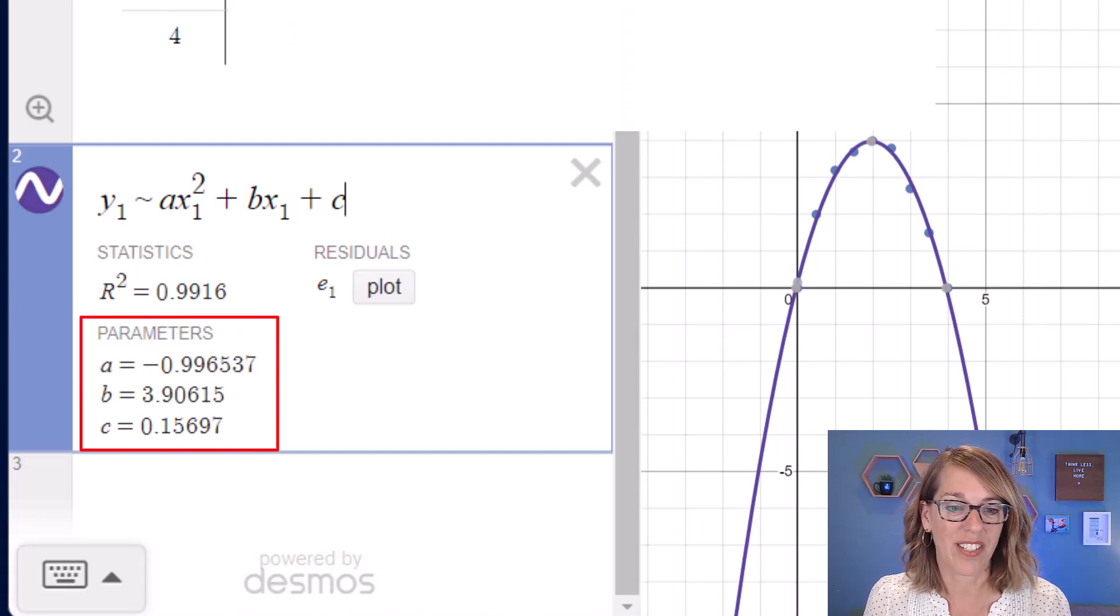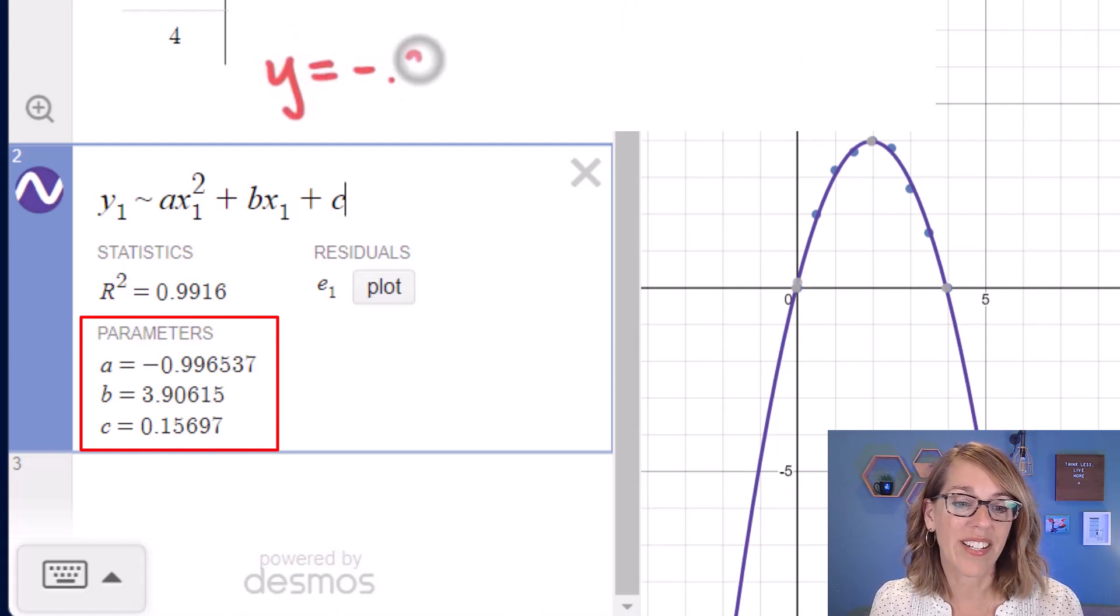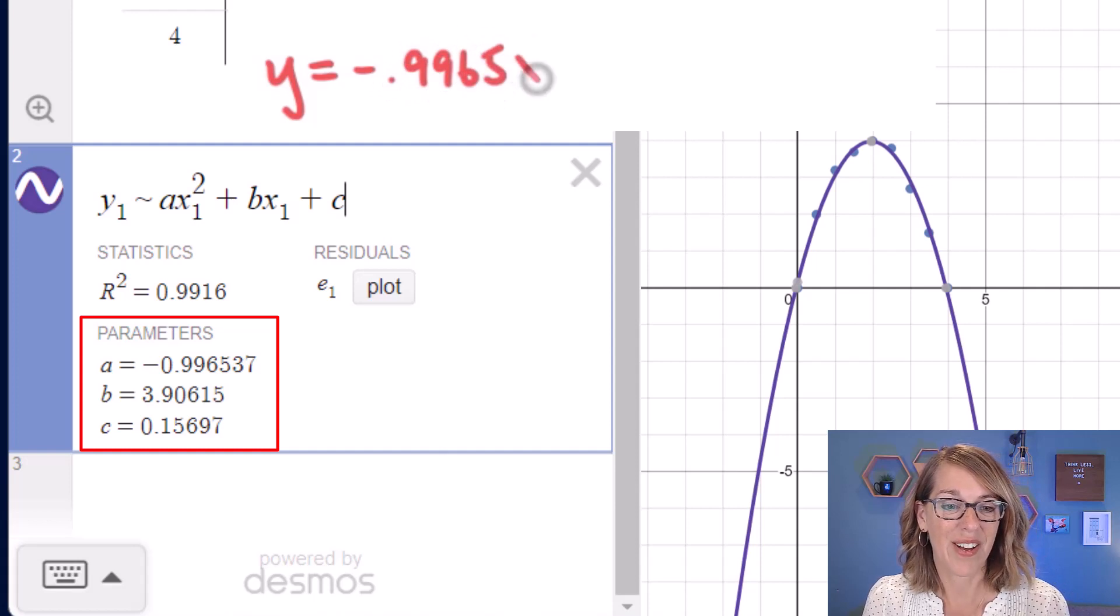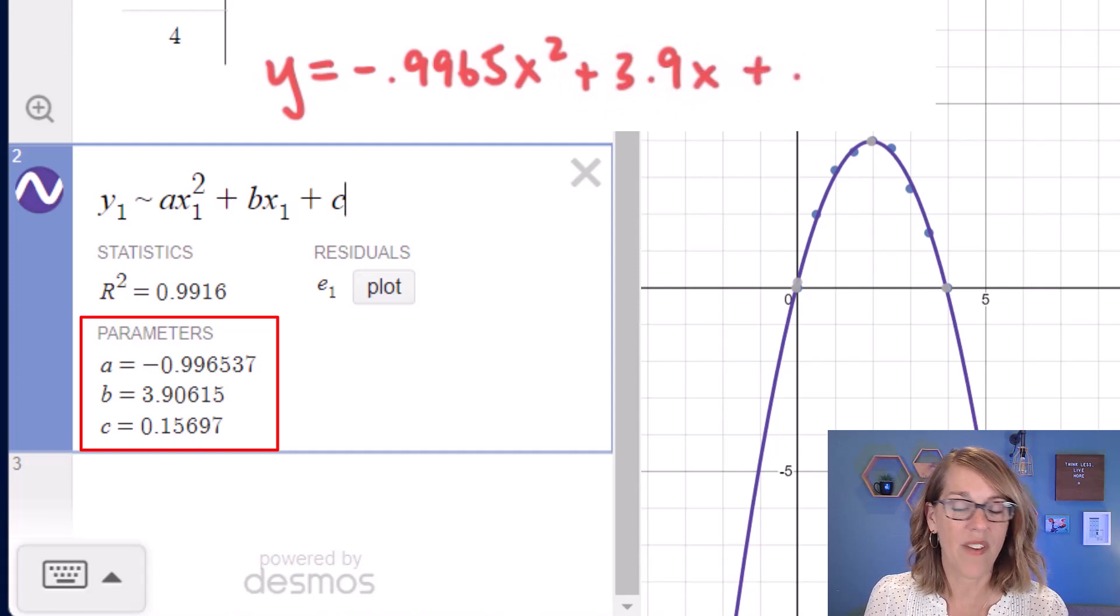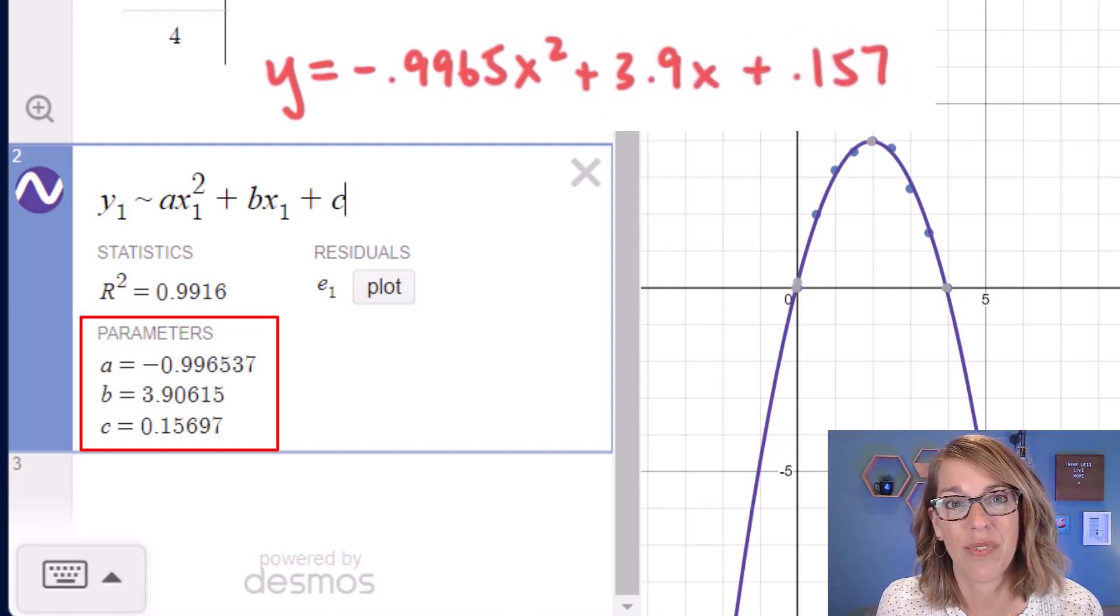And I've also got my coefficients here. So I can go ahead and write this quadratic as negative 0.9965 x squared plus 3.9x plus 0.157, if I want to round to three decimal places.